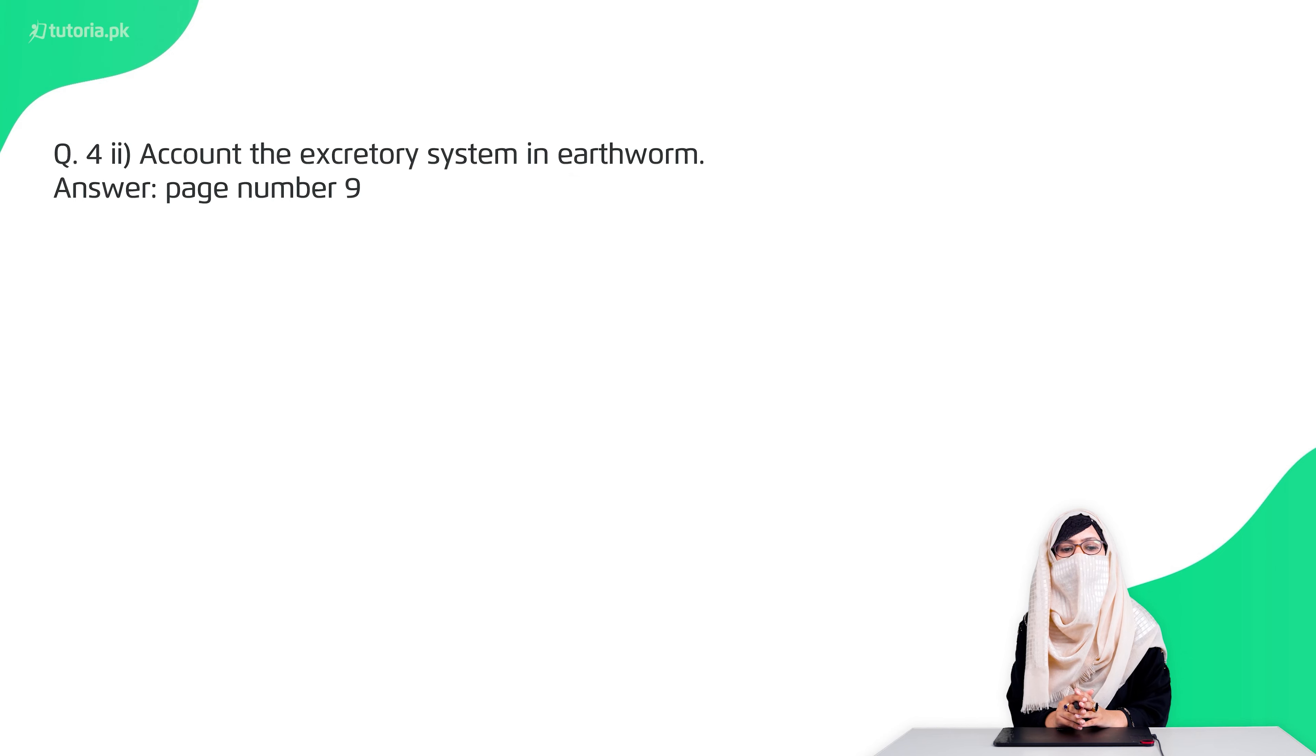Second question is, account excretory system in earthworm. The excretory system is metanephridia. We need to explain the difference between earthworms and other departments with the nephridiopore and then the nephridiopore is eliminated. This is all you have to explain the diagram. The answer to your page number 9 is given.